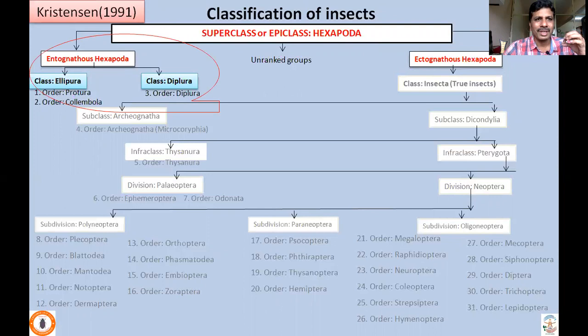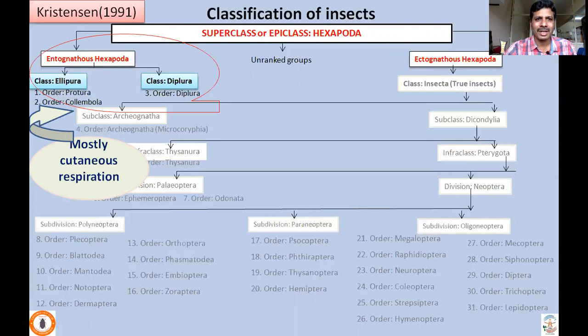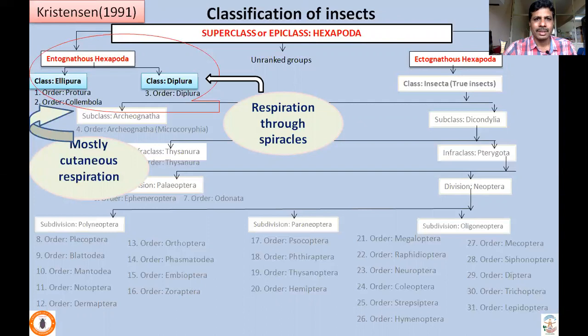Class Ellipura and Diplura can be distinguished by respiration. Class Ellipura mostly respires through the cuticle — they have cutaneous respiration, though a few species also have spiracles. Class Diplura, however, respires through spiracles — they possess spiracles. Let us now look into the distinguishing features of each of those orders.